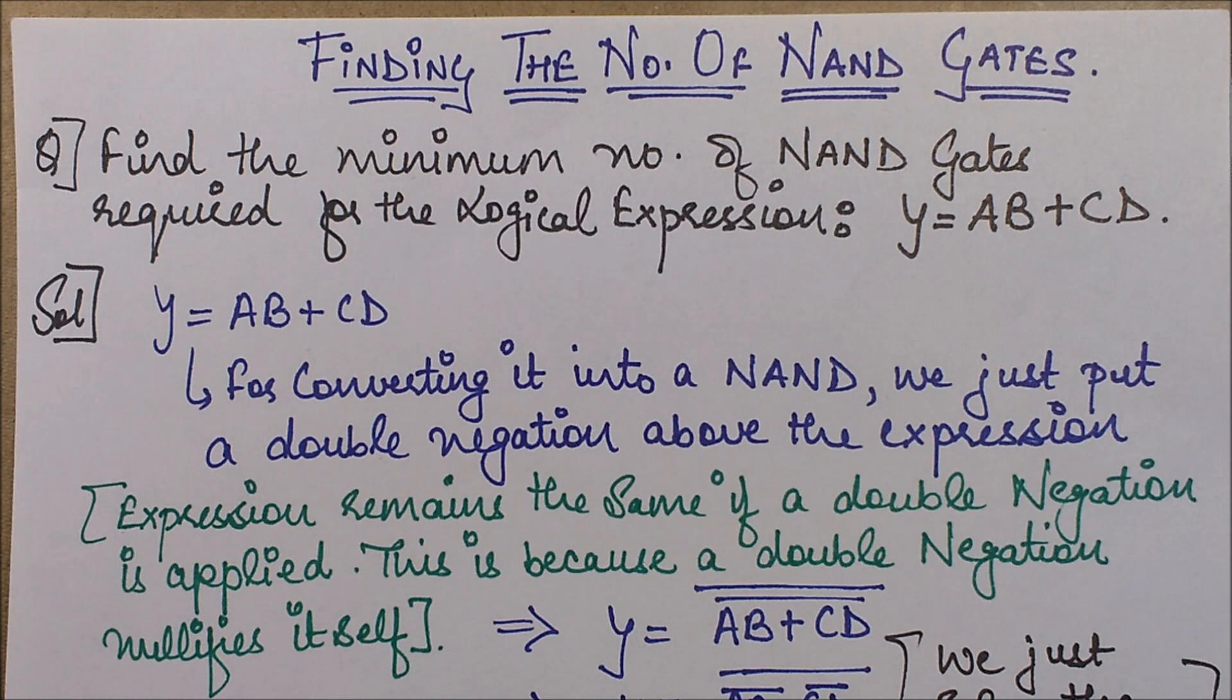The questions that come are like this: find the minimum number of NAND gates required for the logical expression. You will be given a logical expression and then you will be told to find the minimum number of NAND gates required to formulate it. That is, you need to construct that logical expression in the form of a circuit.